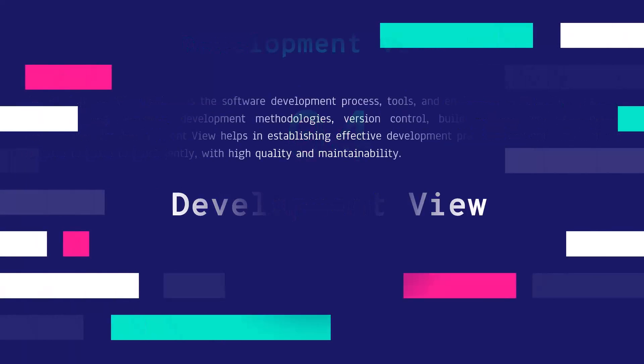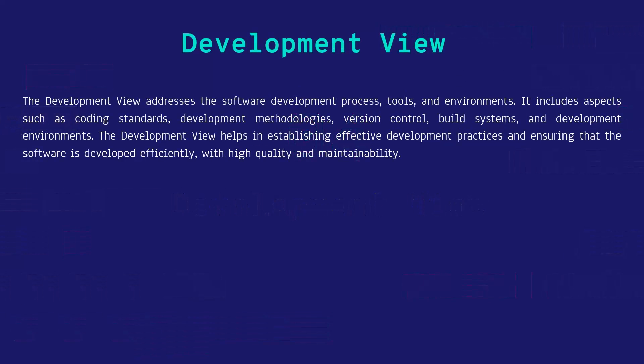The development view addresses the software development process, tools and environments. It includes aspects such as coding standards, development methodology, version control, build systems and development environments. The development view helps in establishing effective development practices and ensures that the software is developed with high quality and maintainability. Many developers think that architecture is just the development view — like Onion Architecture — but Onion Architecture is only one subset of the development view.